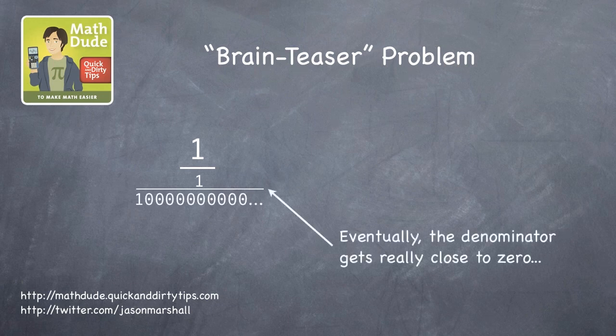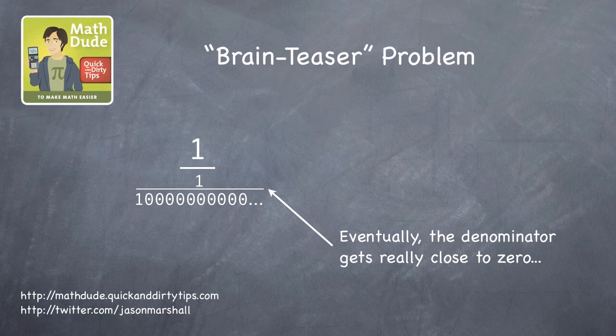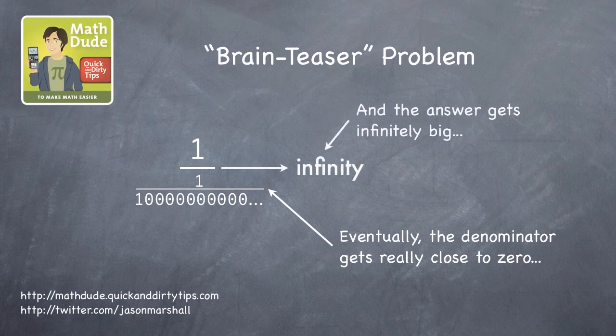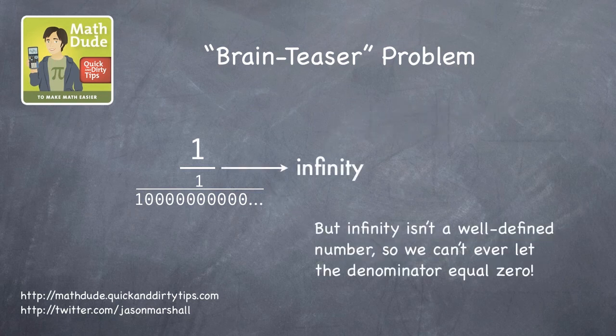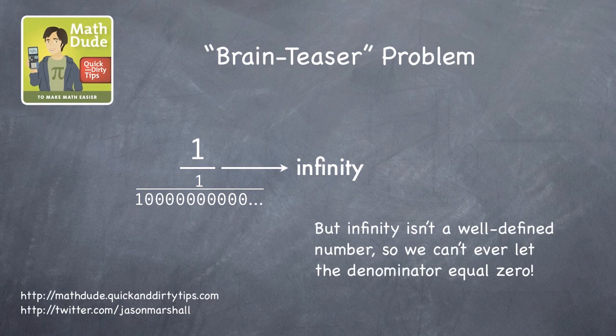And eventually, the denominator would get really close to zero. And as that happens, the answer just keeps getting bigger and bigger, moving towards becoming infinite. But here's the problem. Infinity isn't a well-defined number. It's just not something we can work with. So to head that problem off, we can't ever let the denominator of a fraction quite get to zero. Or else we'd have a problem.